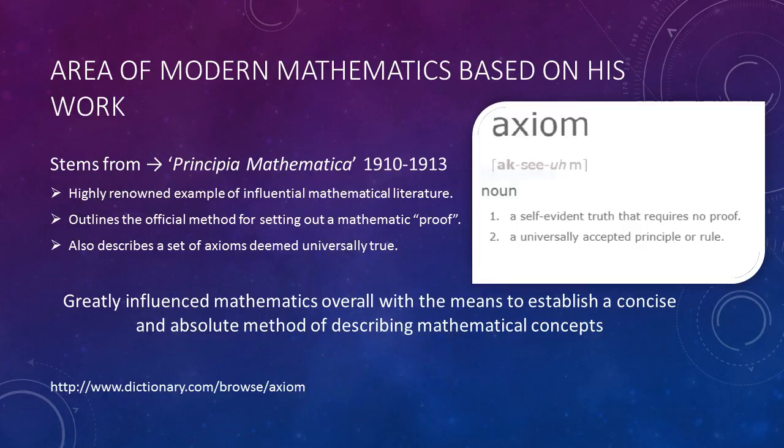With all this said, it is safe to conclude that Alfred North Whitehead is undoubtedly one of the most influential mathematicians to have ever existed, and his contribution has greatly influenced the entirety of modern mathematics for the better.